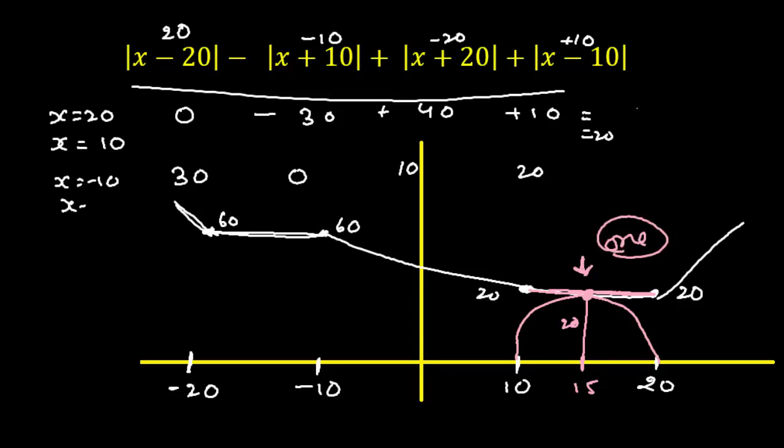So our required answer for the question is how many values of the solution - only one. And what would be the solution? Solution is x equals 15 and y equals 20. So whenever we have two different functions, generally we solve the functions by merging the graphs. First plot the graph of LHS, then plot the graph of RHS and merge the graphs to get the answer.